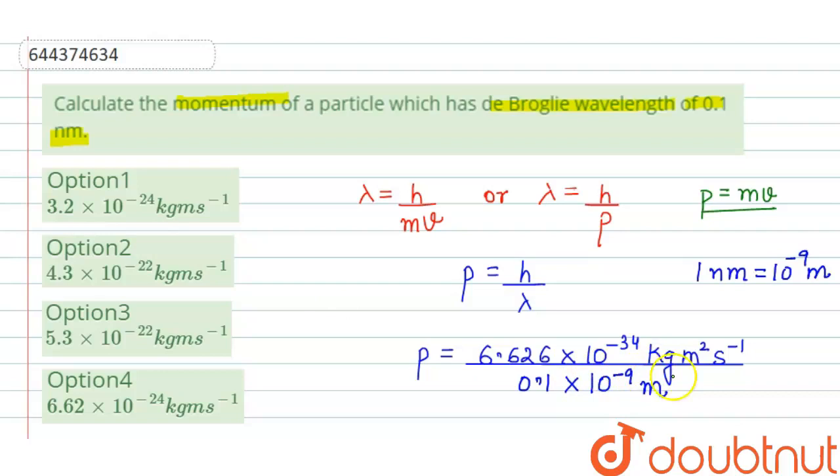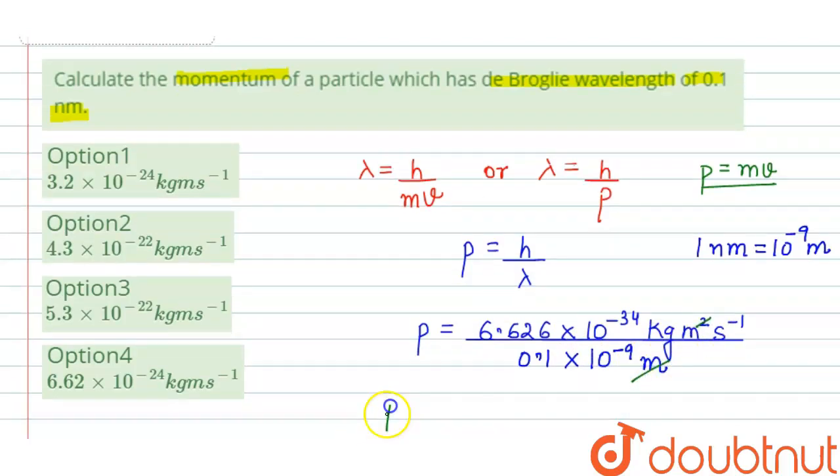From here, the meter will get cancelled out. And the momentum of the particle will be 6.626 into 10 raised to the power minus 34